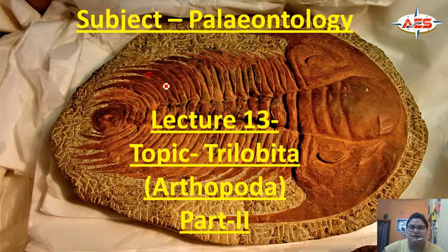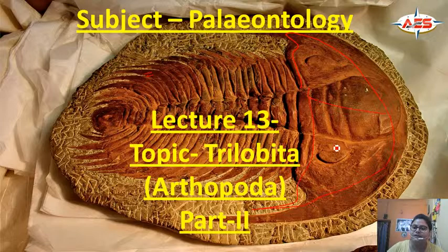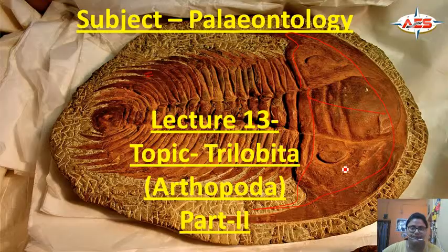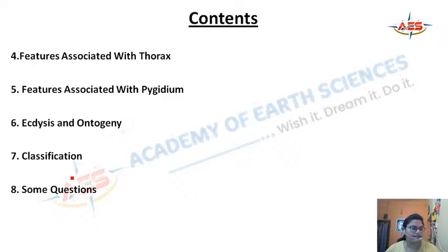We have studied about different parts of Cephalon. You can see in this picture that this part is the Cephalon part — this whole part. We have studied about different features in this part. Today we will see the features associated with Thorax, the features associated with Pygidium, what is Ecdysis and Ontogeny, their classification, and some questions.